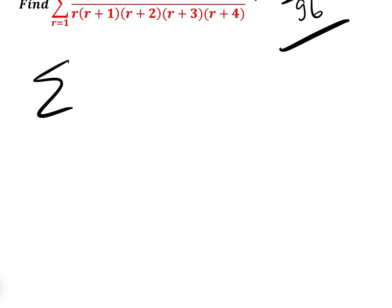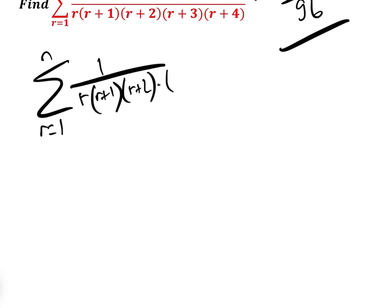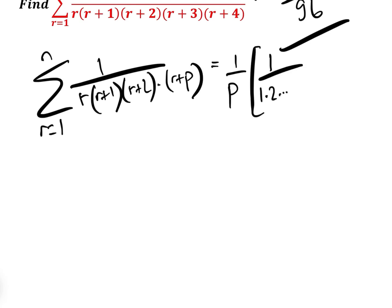So the formula is: the sum from r equals 1 to n of 1 over r(r+1)(r+2)···(r+p) equals 1/p times [1 over (1×2×···×p) minus 1 over (n+1)(n+2)···(n+p)].